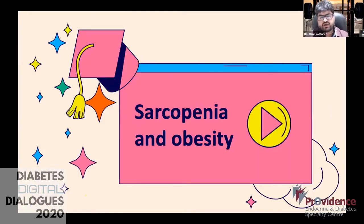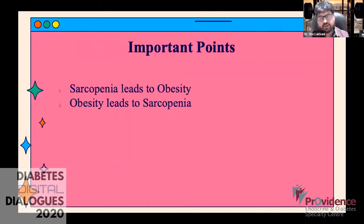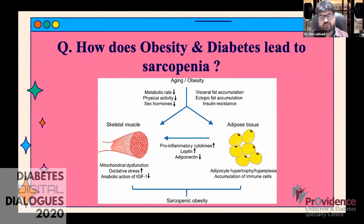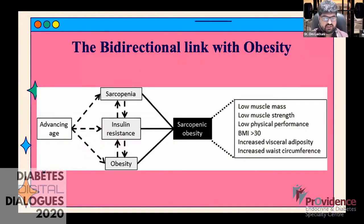Let's discuss sarcopenic obesity. There is no formal definition, but it is essentially low muscle mass with increased fat mass — assessable with a DEXA body composition report. Importantly, sarcopenia and obesity have a bidirectional link: sarcopenia leads to obesity and obesity leads to sarcopenia. Obesity is a mild pro-inflammatory state that depletes skeletal muscle, while reduced skeletal muscle increases insulin resistance and often worsens obesity.